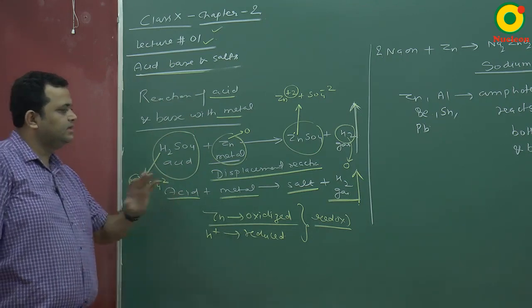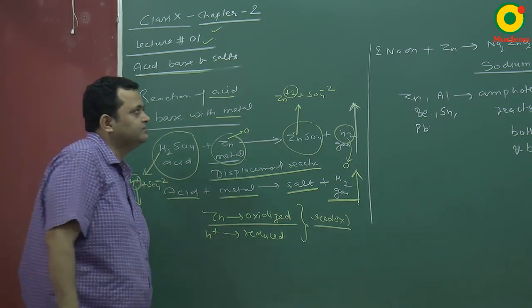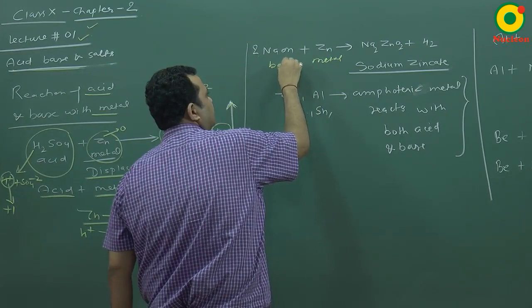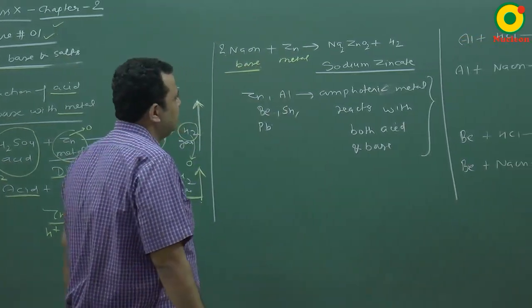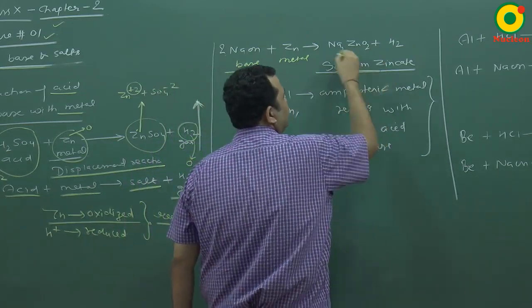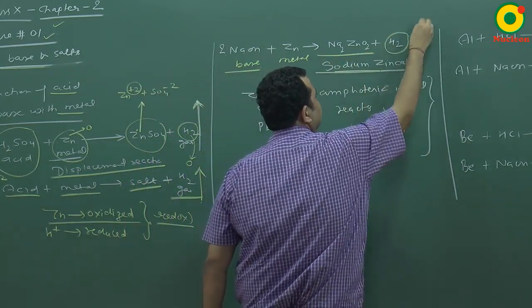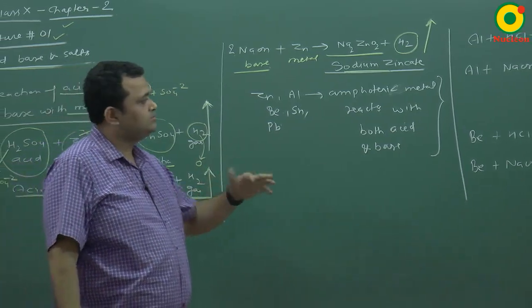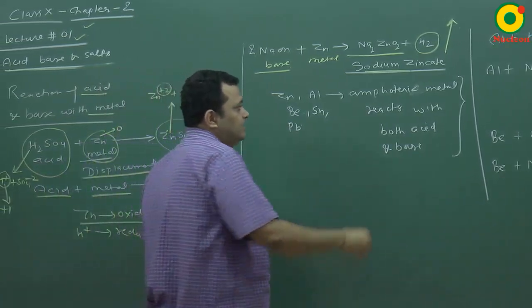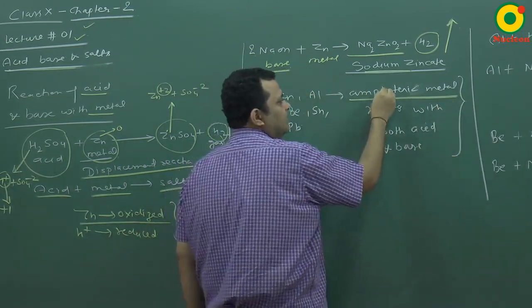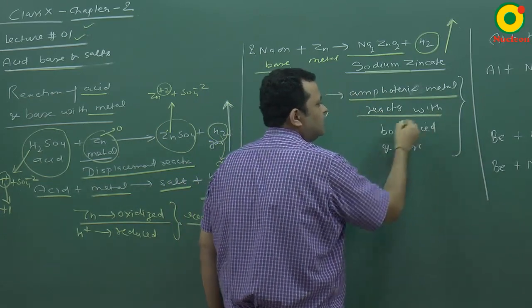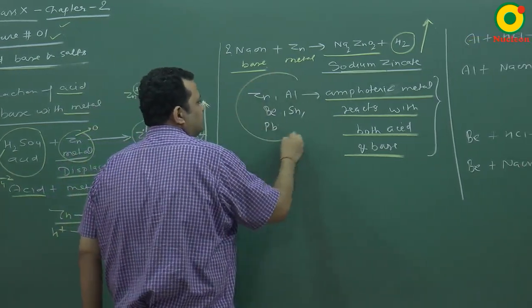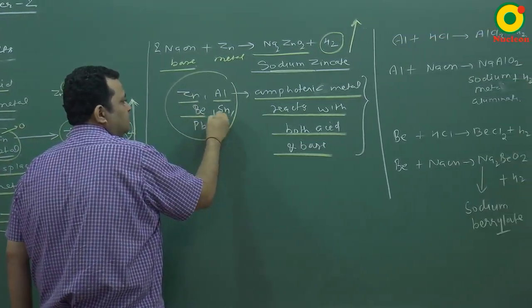Mostly, acid and metal reactions produce hydrogen gas and a salt. When zinc reacts with NaOH base, sodium zincate Na2ZnO2 is formed along with hydrogen gas. Zinc reacts with both acid and base, so it is called an amphoteric metal — a metal that reacts with both acid and base. Other examples of amphoteric metals are zinc, aluminium, beryllium, tin, and lead.